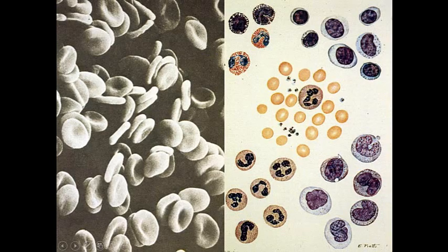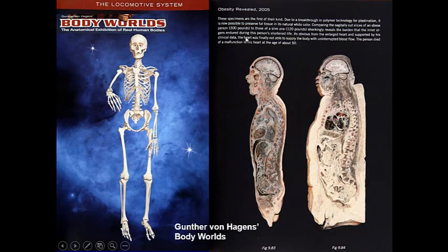Here we see red blood cells — the biconcave disc — neutrophils, monocyte which gives rise to macrophage, lymphocytes, eosinophils, and basophils.